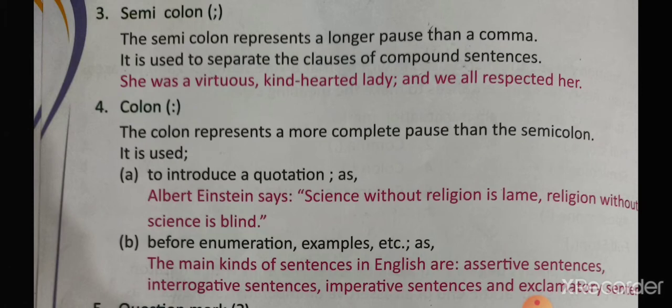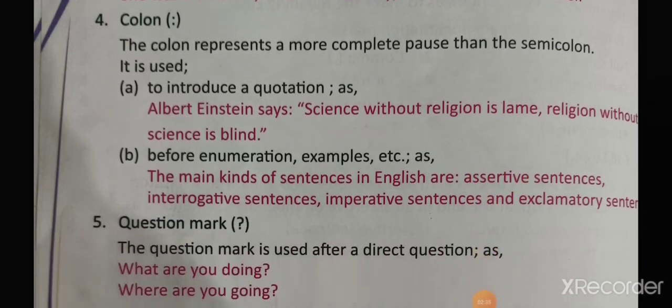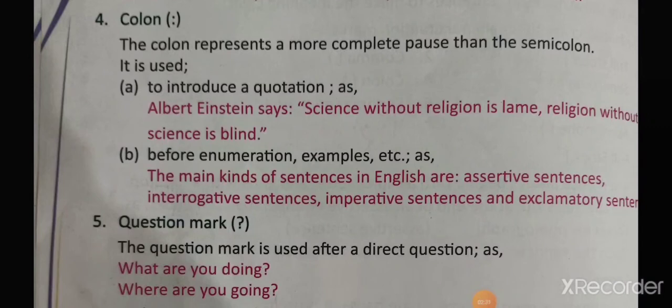Next is colon. Colon is used to introduce a quotation — whenever we are starting a quotation, we use colon before it. It is also used before enumeration. For example: the main kinds of sentences in English are assertive, interrogative, imperative and exclamatory. In this we are explaining something, so we have used colon.